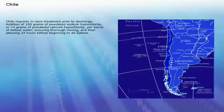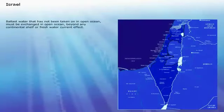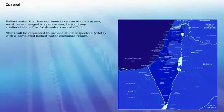Chile requires in-tank treatment prior to discharge: addition of 100g of powdered sodium hypochlorite or 14g of powdered calcium hypochlorite per tonne of ballast water, ensuring thorough mixing and then allowing 24 hours before beginning to de-ballast. Ballast water that has not been taken on in open ocean must be exchanged in open ocean, beyond any continental shelf or fresh water current effect. Ships will be requested to provide ship's inspectors and pilots with a completed ballast water exchange report.